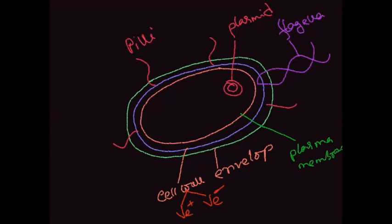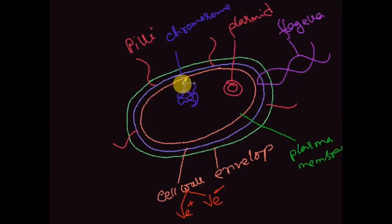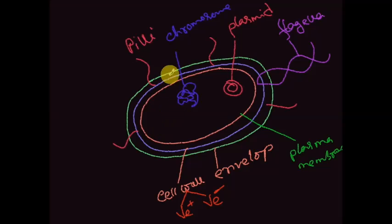Inside the bacterial cell we see thread-like structures called the bacterial chromosome. Its function is to hold the DNA materials, spread across the surface inside the bacterial cell membrane.